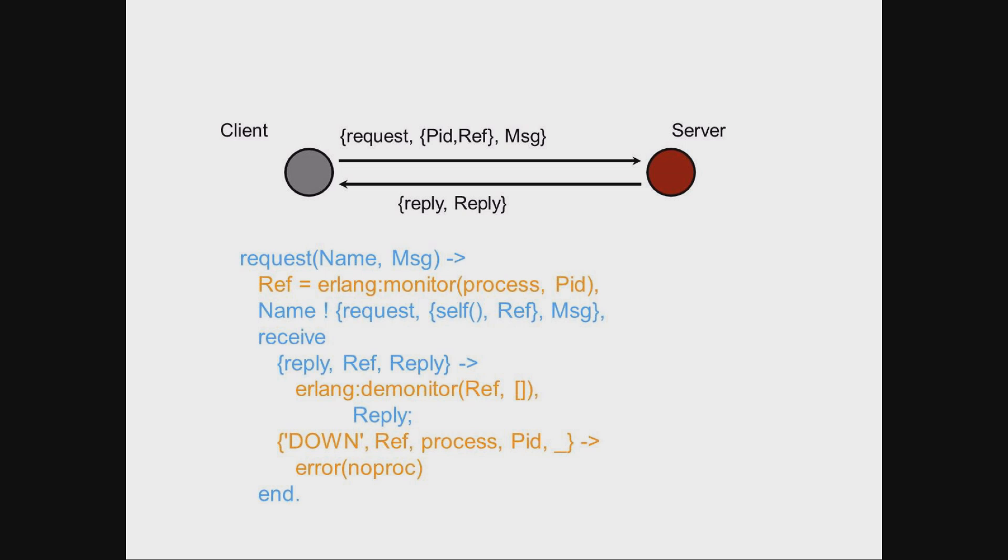In this example, the built-in function erlang:monitor will create a unidirectional monitor between the client and the server. If the server doesn't exist or if it terminates whilst we're monitoring, we get a down message with this unique reference. If the server works and we get back a response, we demonitor that server and return the reply as part of the request.